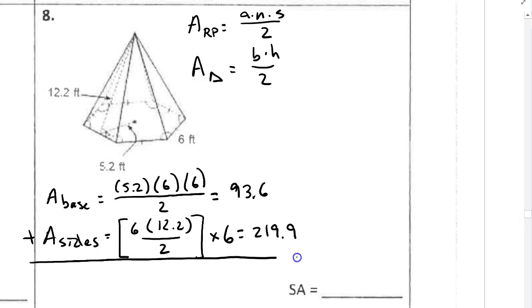We'll add all these up to get the total surface area. Which, if I've done my calculations correctly, and again, you should double check mine, is 313.2 feet squared.